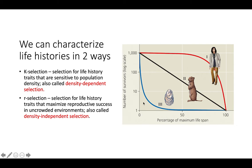R-selected species involve selection for life history traits that maximize reproductive success in uncrowded environments — called density-independent selection. R-selected species produce a large number of offspring but give them very little parental care. Many of them will die, but the strategy is that if a high enough number of offspring are produced, then even with predation, competition, and other mortality factors, some offspring will survive and pass on those genes to the next generation.